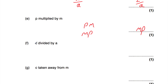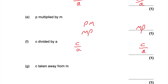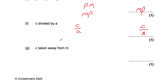Part f: c divided by a. We've got c, and we're going to divide it by a. So c goes on the numerator and a goes on the denominator — so c divided by a. Part g: c taken away from m. So we're taking c away from m. If c was 2 and m was 10, 2 taken away from 10 would be 8 — so we do 10 take away 2. So the algebraic expression is m subtract c, because that is c taken away from m.